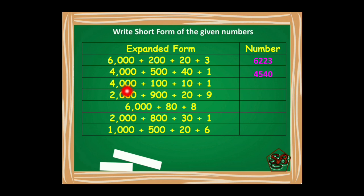Moving on to the next example: 4000 plus 100 plus 10 plus 1. So 4 in thousands place, 1 at hundreds place, 1 at tens place and 1 at ones place. The number formed will be 4111. Moving on to the next number: 2000 plus 900 plus 20 plus 9. 2 at thousands place, 9 at hundreds place, 2 at tens place and 9 at ones place. So the number formed is 2929.